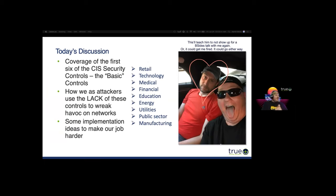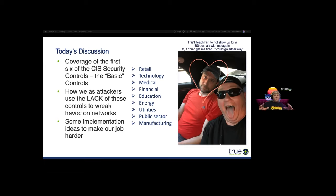Usually Josh is here with me going over these controls. In lieu of him being here, I put a little heart around his face on this picture — he hates it. This will teach him not to show up for a BSides talk with me again. What we're going to cover today is the first six CIS basic security controls — called the basic controls — and how we as attackers use these controls, or rather the lack thereof, to attack your network.